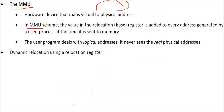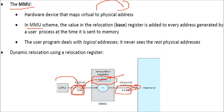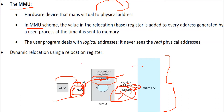The MMU scheme works by adding the value of the relocation register, which is the base register, to every address generated by the user process. For example, if a logical address is 346 and the relocation register holds 14000, then 14000 + 346 = 14346, which becomes the actual physical address in memory. The user program only deals with logical addresses and will never see the physical address.